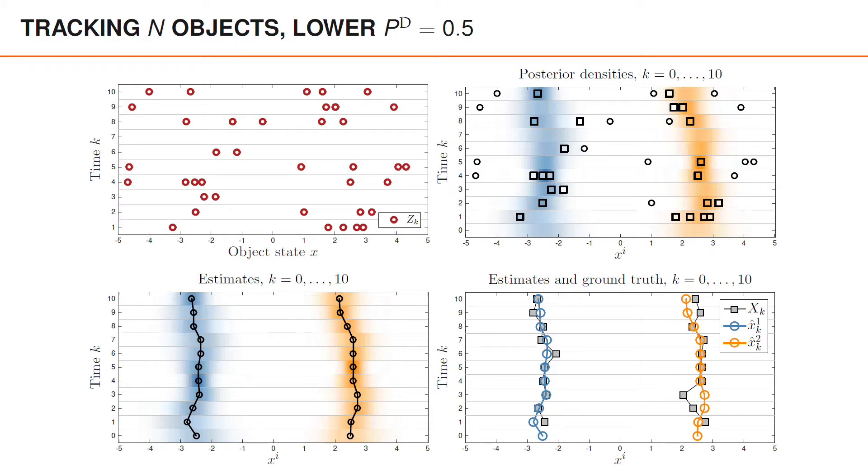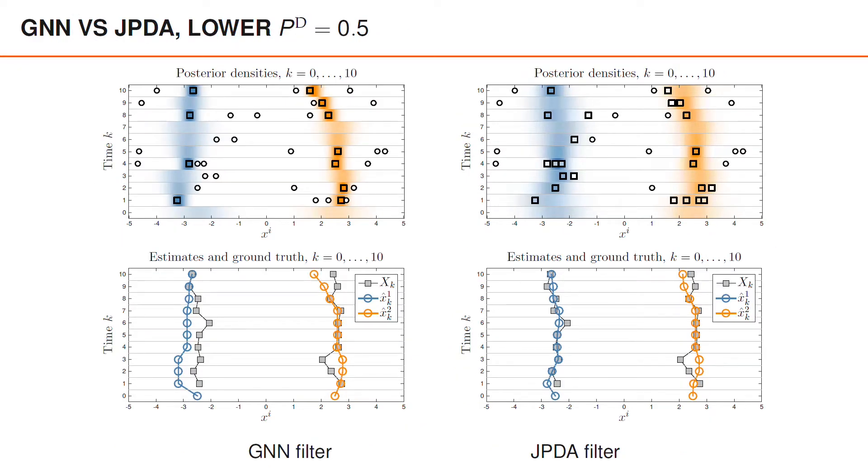Let's compare again to the results that we had using GNN. In this case, we can actually see some significant differences. Comparing the posterior densities, we see that JPDA in general has a higher variance than what GNN does, especially after measurements that have been associated in GNN. This is due to the fact that JPDA better captures that there is still a fairly large probability of misdetection. If we compare the estimates, we see that for this particular example, JPDA is quite a lot better than GNN. This is especially true for object 1 on the left, which has a larger error for GNN from time 1 to time 8, whereas JPDA has much smaller error for the same object and time steps.